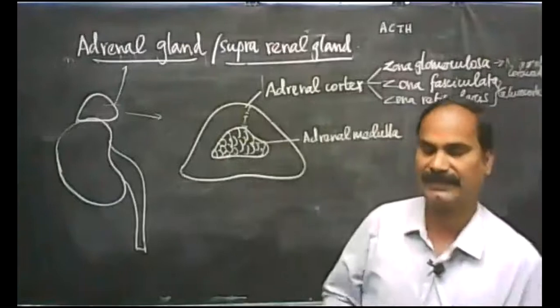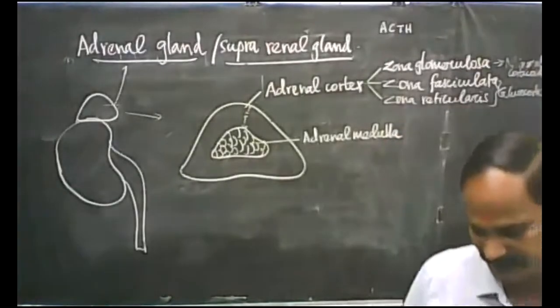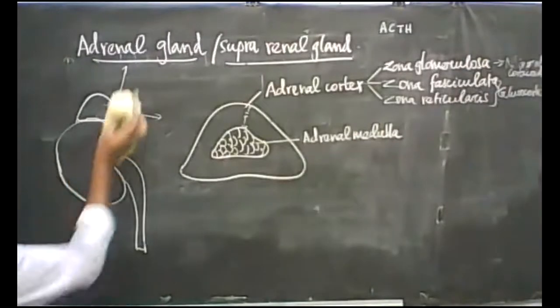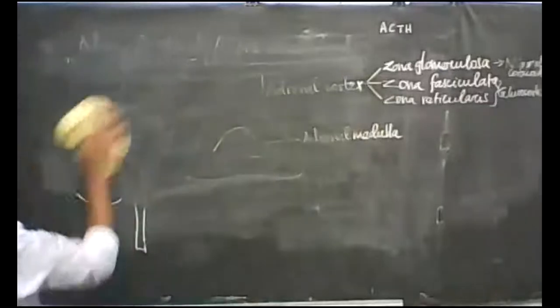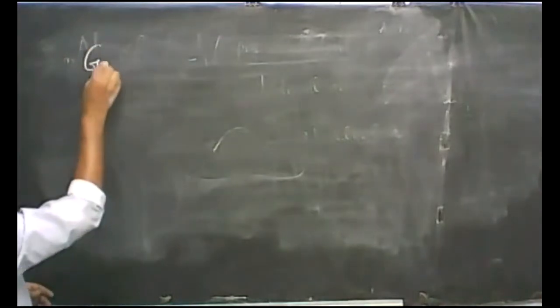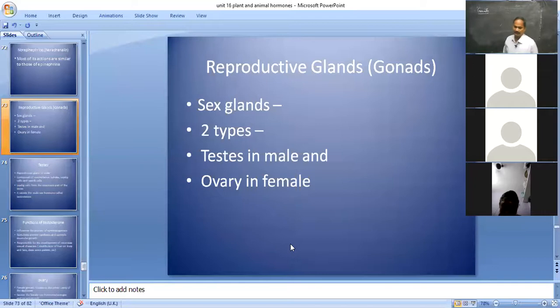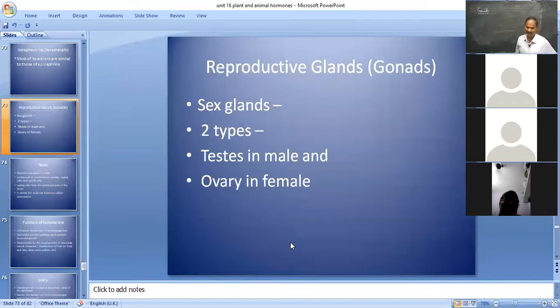Now let us pass on to the next endocrine gland — ovary and testis. Both are endocrine glands called gonads. The male and female reproductive glands are gonads, also called sex glands. There are two types of sex glands: testis in male and ovary in female.